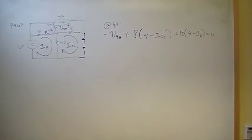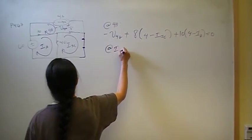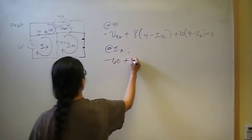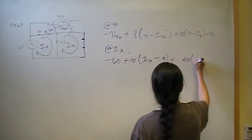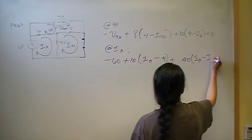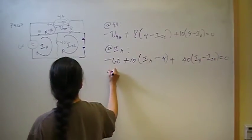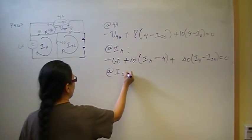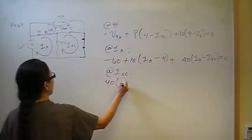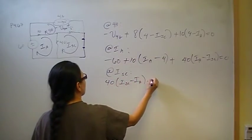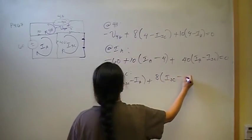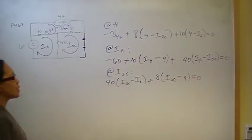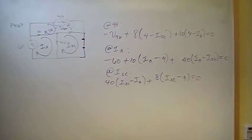The next mesh equation is for mesh at Ia. The first drop is negative 60, plus 10 times (Ia minus 4), plus 40 times (Ia minus I short circuit). Expanding and collecting terms gives 40 times Ia and negative 40 times I short circuit. All of that equals zero. So now we have three equations and three unknowns and will build a 3×3 matrix.